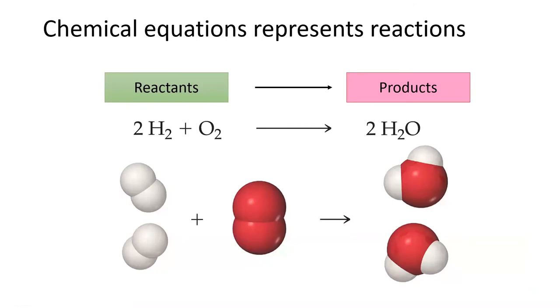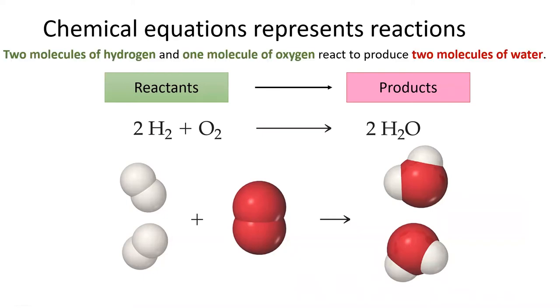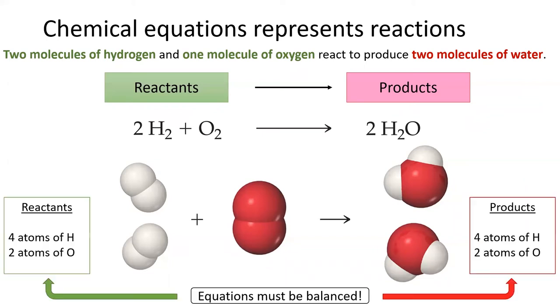A chemical equation is how chemists represent a reaction. Each chemical equation can be read like a sentence, with reactants on the left going to products on the right. This chemical equation reads: two molecules of hydrogen and one molecule of oxygen react to produce two molecules of water. All equations must follow conservation of mass, meaning they have the same number of each atom on the left and on the right. Anytime you write a chemical equation, it has to be balanced.